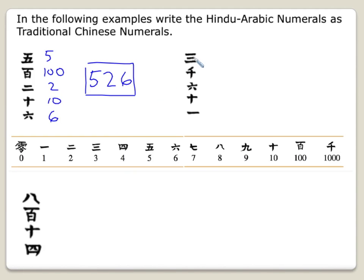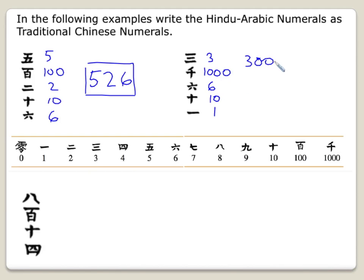Let's try our next one. This symbol is 3, this symbol is 1,000, this symbol is 6, this symbol is 10, and this symbol is 1. So it's going to be 3 times 1,000 plus 6 times 10, which is 60, plus 1. So it's the number 3,061.